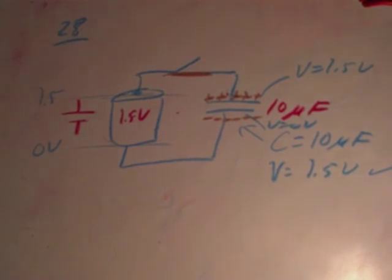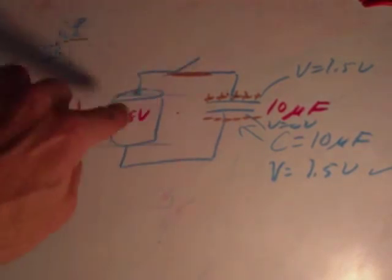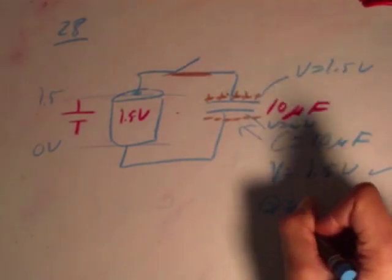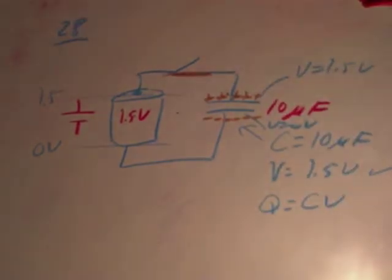To get the amount of charge that must have flown, must have gone through the switch from the battery onto the capacitor, you can just use the definition of capacitance, Q equals CV, to get that to work out.